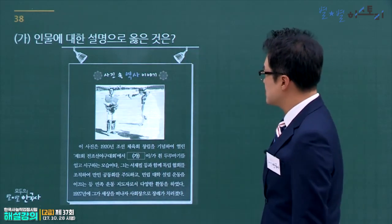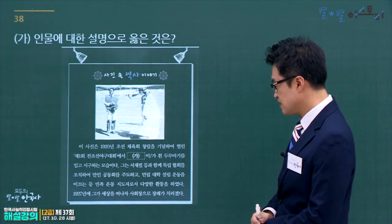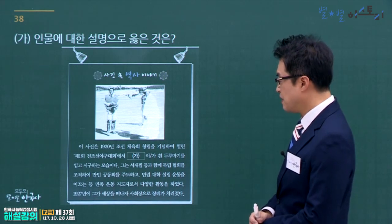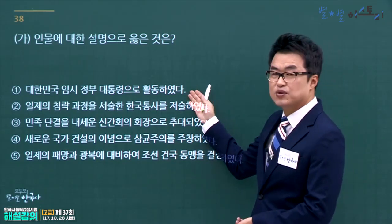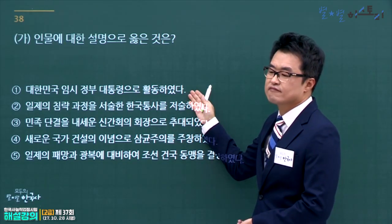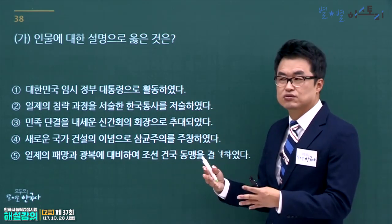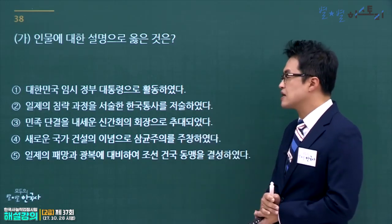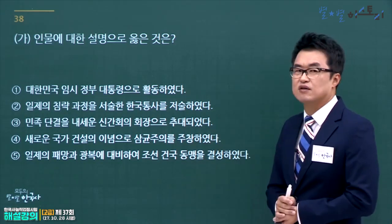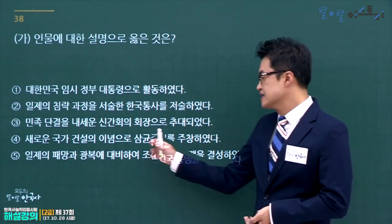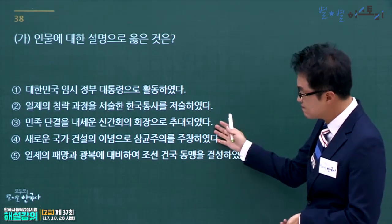대한민국 임시정부 대통령 활동, 한국통사 서술 등은 박은식과 관련됩니다. 민족당렬을 이끌고 신간회 회장을 지낸 인물은 이상재입니다. 삼진주의는 조소앙, 조선건국동맹은 여운형입니다. 이 문제는 난이도 상에 해당하는 어려운 문제로 정답은 3번, 이상재입니다.